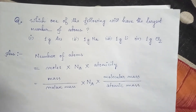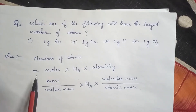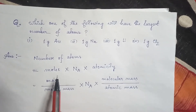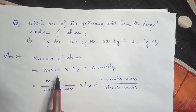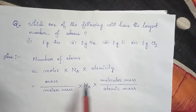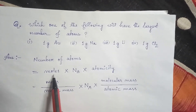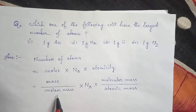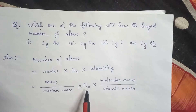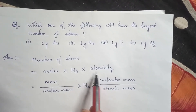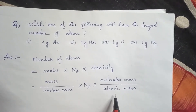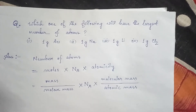So to remember: number of atoms = number of moles × Avogadro number × atomicity. Number of moles = mass ÷ molar mass. Atomicity = molecular mass ÷ atomic mass.